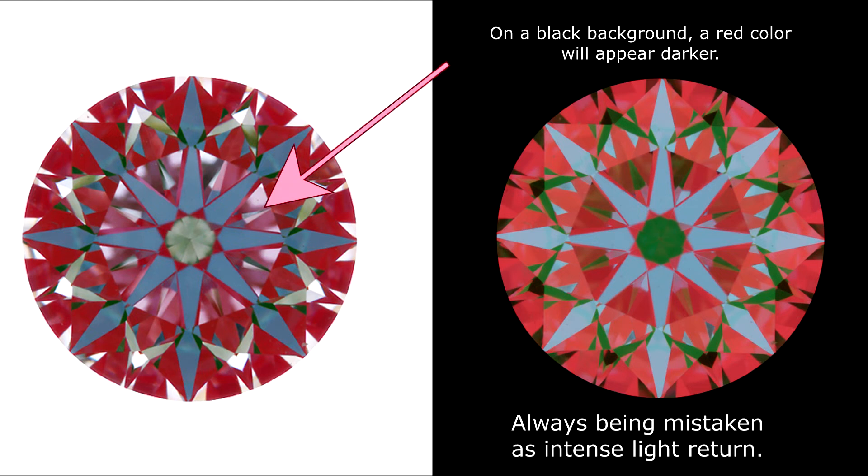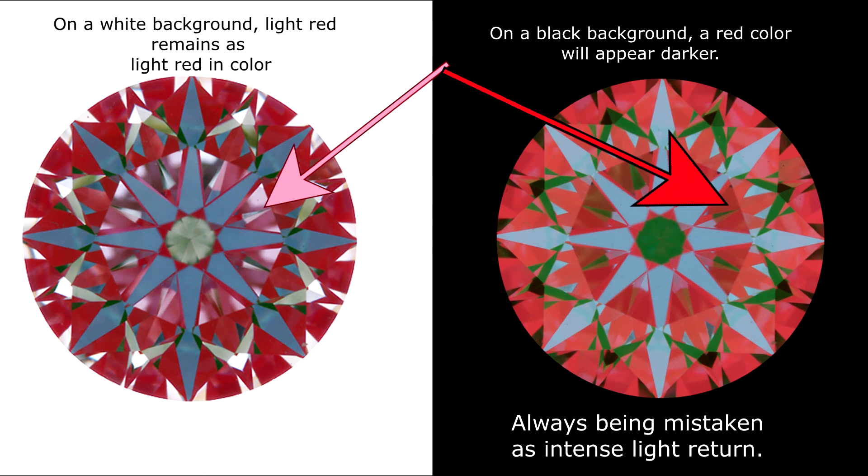But on a black background, light red becomes dark red. So what happens is you're mistaking all these light leakages in the middle as intense light return. This can be very confusing to consumers as they are a complete opposite of each other. You will also notice that some of the white areas are now dark green in color.